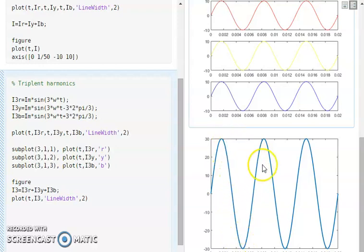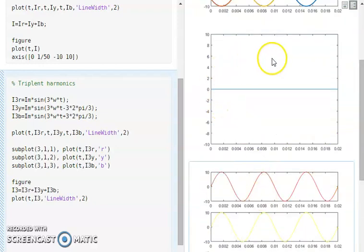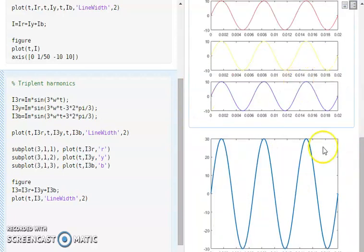That means the size of the neutral conductor needs to be increased at least by two times when the system gets more non-linear in nature. As against the system where the system is completely balanced, the current becomes zero. But when the system becomes highly non-linear with the triplet component, the neutral current becomes three times more than one of the triplet harmonics in the R, Y, or B phases.